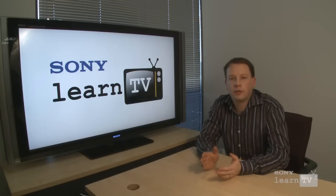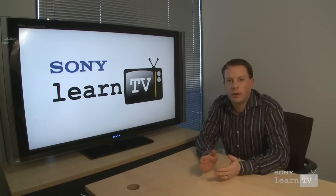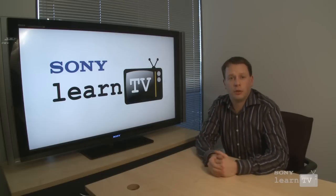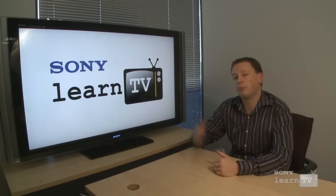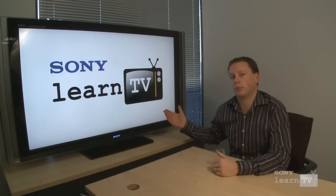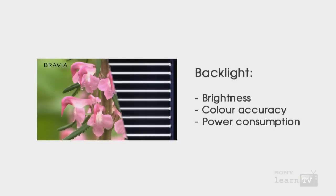In a system like that, there are a variety of elements that are going to determine the picture quality. Obviously the backlight is one of them. The backlight can affect the brightness of the picture and it can affect the colour accuracy. Imagine if you've got a backlight that has a slight yellow tinge to it — if you then shine it through one of those red coloured filters, instead of getting a nice deep red, you're going to get a colour that's a bit more orangey.